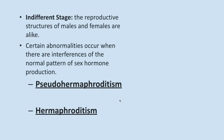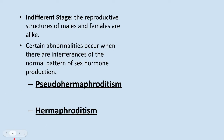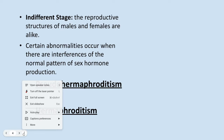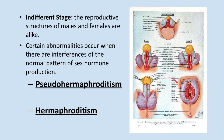What is an indifferent stage? The indifferent stage occurs during the early stage of development where the reproductive structures of males and females are alike. Certain abnormalities occur in this stage when there are interferences with the normal pattern of sex hormone production. Pseudo-hermaphroditism is when individuals have accessory reproductive structures that do not match their gonads. Meanwhile, hermaphroditism is when individuals produce both ovarian and testicular tissues.